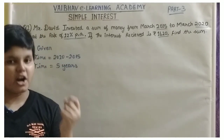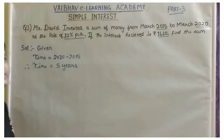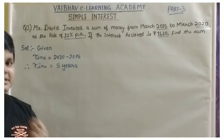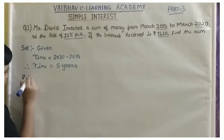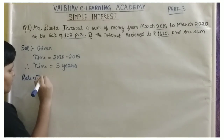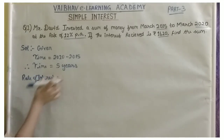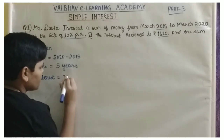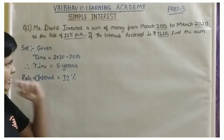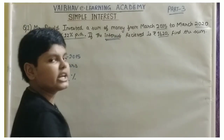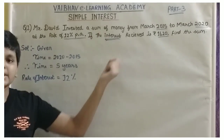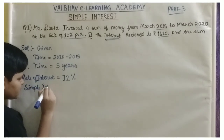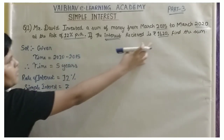We are not given the principal value, but we are given the rate of interest. Rate of interest is denoted by R, but it can also be denoted by ROI — Rate of Interest. Rate of interest is 12% per annum. The interest received — as we have learnt in the starting video — is Simple Interest, which equals 1,620.